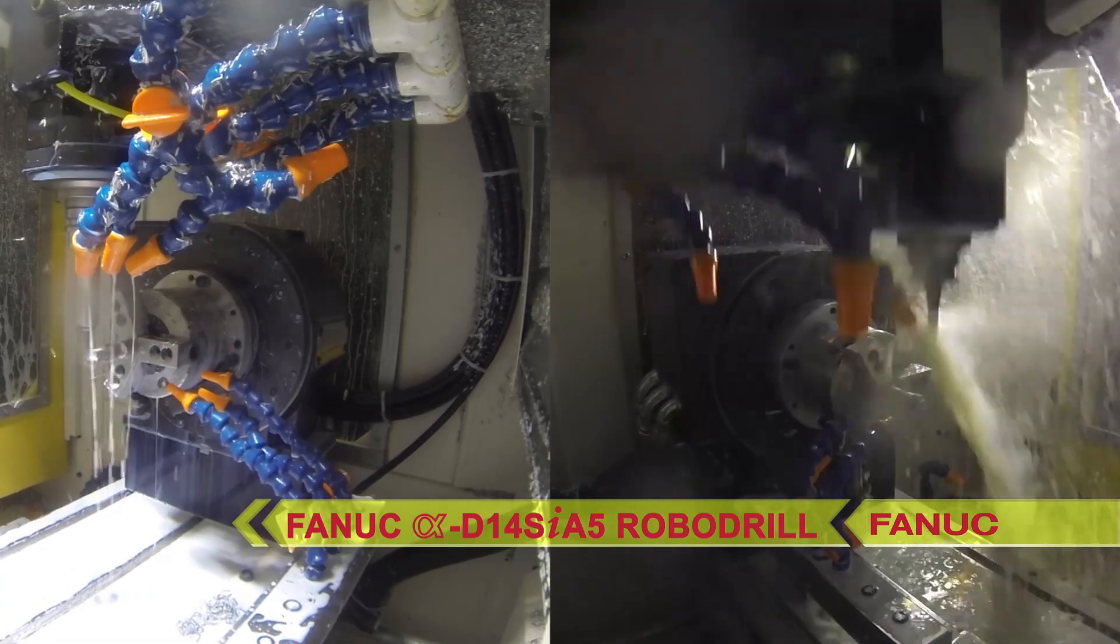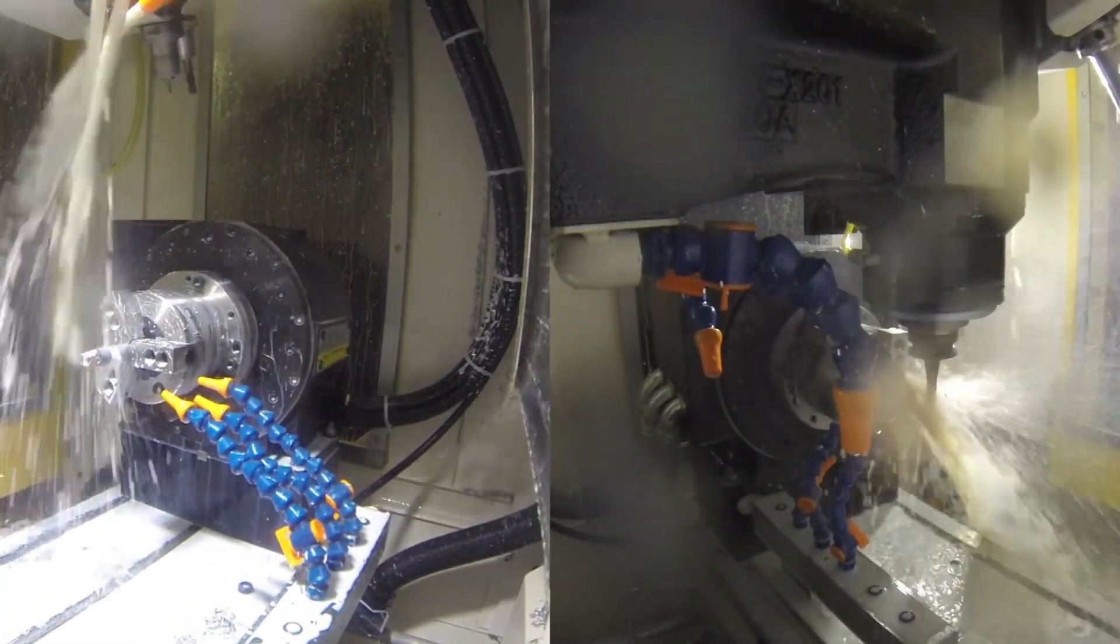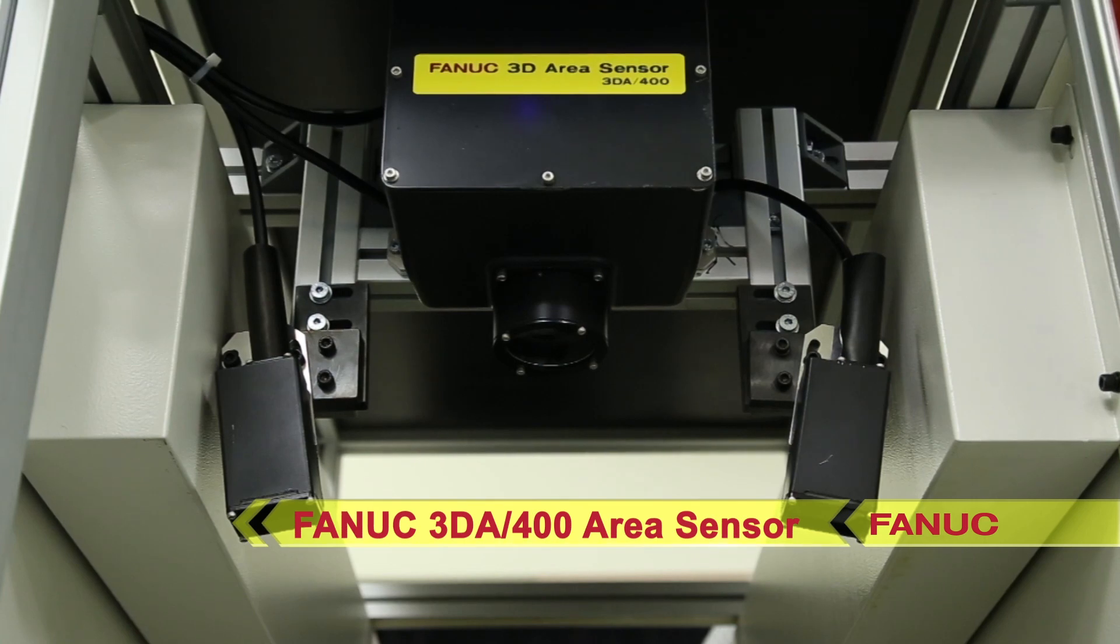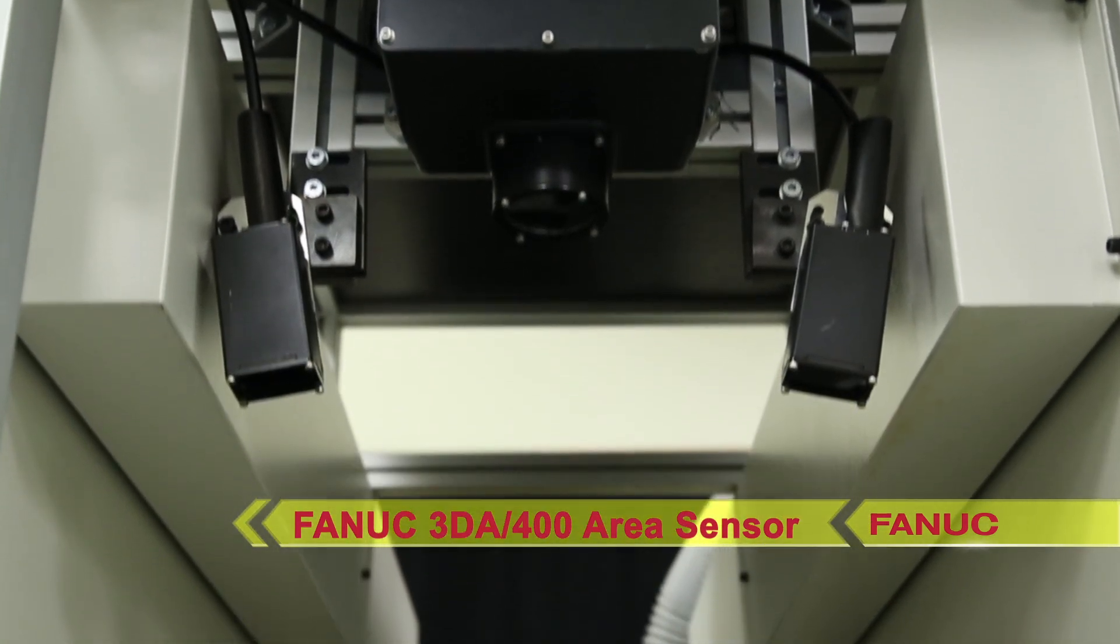An LRMate 200ID robot uses FANUC's new IR Vision 3DA400 small area sensor to automatically locate and pick randomly oriented uncut slugs from a bin.